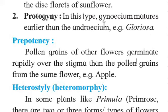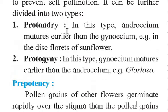So in protogyny, the gynoecium matures first compared to the androecium. Both these devices — protandry and protogyny — have been developed by plants to favor cross-pollination. The word 'andry' comes from androecium. Both protandry and protogyny are devices plants have developed to favor cross-pollination.